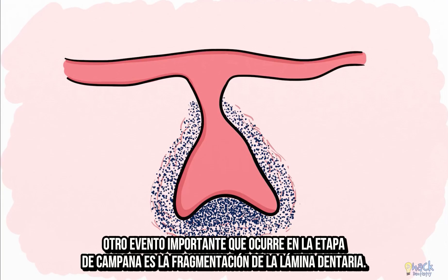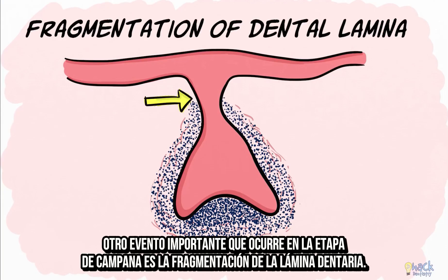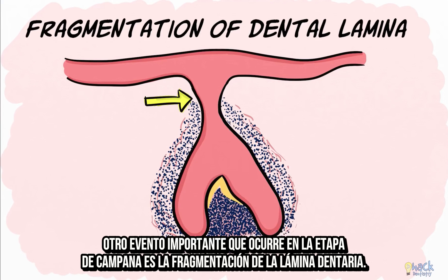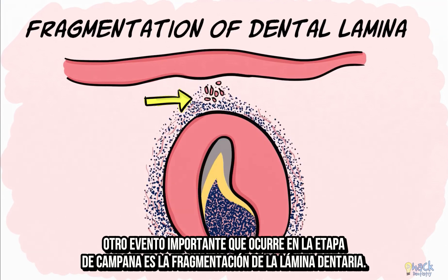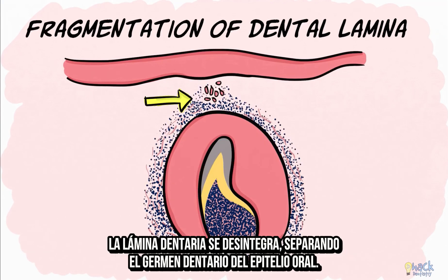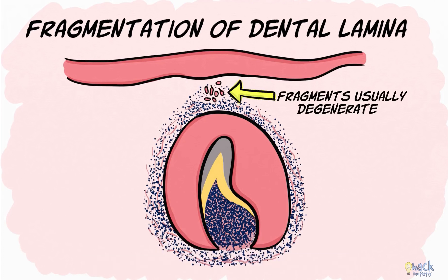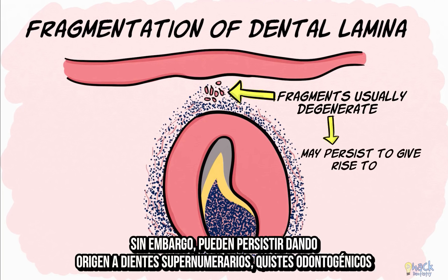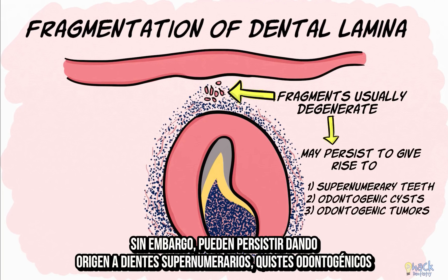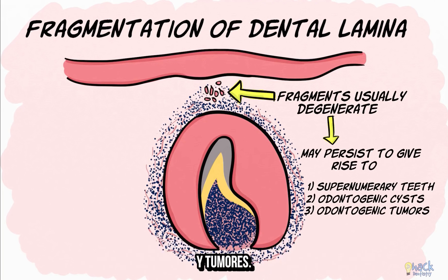Another important event happening at the bell stage is the fragmentation of the dental lamina. The dental lamina disintegrates, separating the tooth germ from the oral epithelium, and these fragments degenerate. However, they may sometimes persist to give rise to supernumerary teeth, odontogenic cysts, and also odontogenic tumors.